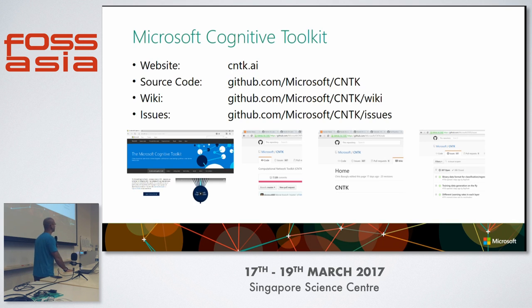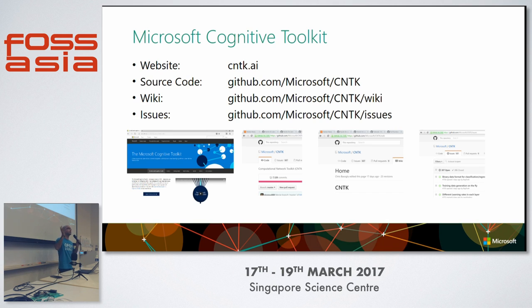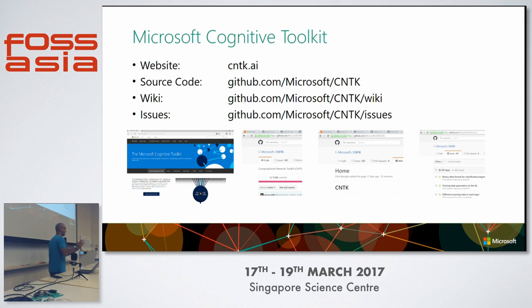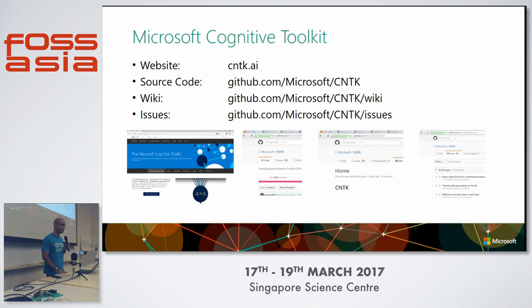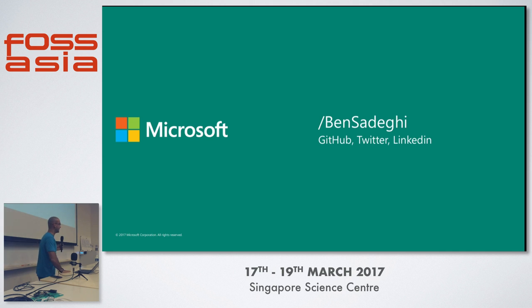A few links: cntk.ai is the actual website. As I mentioned, there's a gallery of architectures out there — what others have tried, what's really worked for them — so you can browse those, clone one, and go forward. All the issues and a big wiki are there too. Pull requests are very much welcome, so if you get involved, do feel free to contribute. That's my brief talk on CNTK. Thank you.